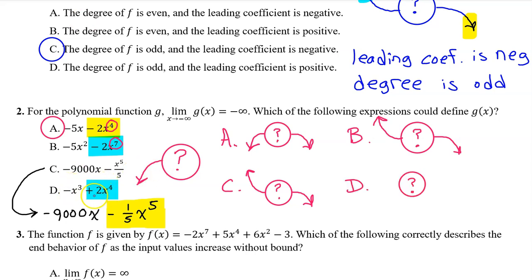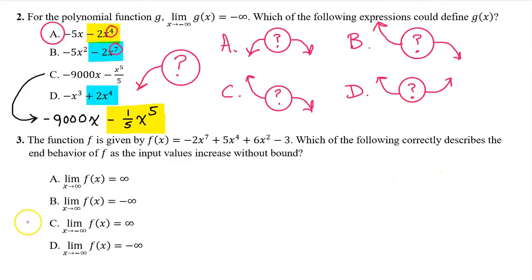For option D, the leading term is 2x to the fourth power because this is the one with the highest degree. The fact that the leading coefficient is positive means that the polynomial is approaching positive infinity on the right. The fact that the degree is even means that the end behavior on the left will match the end behavior on the right. So again, option A was the only one that approaches negative infinity on the left.